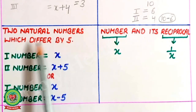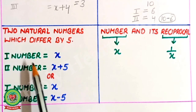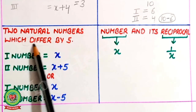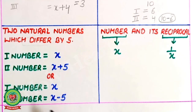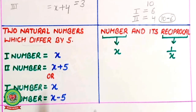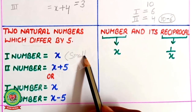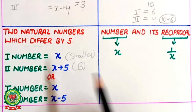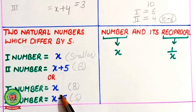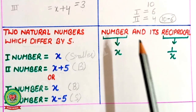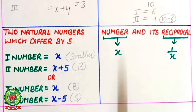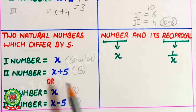For two natural numbers which differ by 5, if the first number is x, the second number is x plus 5. The word 'differ' means a difference of 5 — it can be either plus or minus. So the numbers can be x and x plus 5, where x is the smaller, or x and x minus 5, where x is the bigger. Both approaches give the same answer. For a number and its reciprocal, if the number is x, then its reciprocal is 1 upon x.